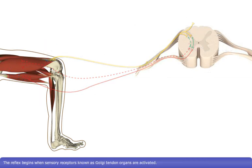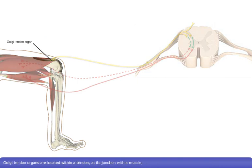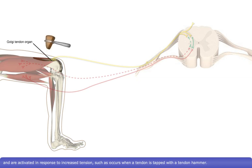The reflex begins when sensory receptors known as Golgi tendon organs are activated. Golgi tendon organs are located within a tendon, at its junction with a muscle, and are activated in response to increased tension, such as occurs when a tendon is tapped with a tendon hammer.